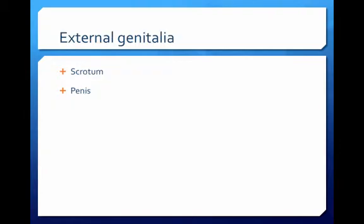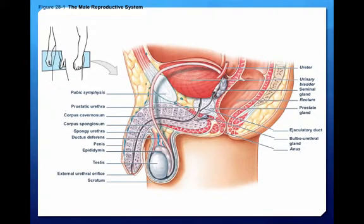The male external genitalia include the scrotum, which encloses the testes, and the penis, an erectile organ that contains the distal portion of the urethra. The scrotum is a fleshy pouch suspended inferior to the perineum and between the base of the penis and the anus. Follow the path of the sperm as it travels from the testes, to the epididymis, to the ductus deferens, to the ejaculatory duct, to the spongy urethra, and finally out the external urethral orifice. Note how the ejaculatory duct and the prostatic urethra join to form the spongy urethra.